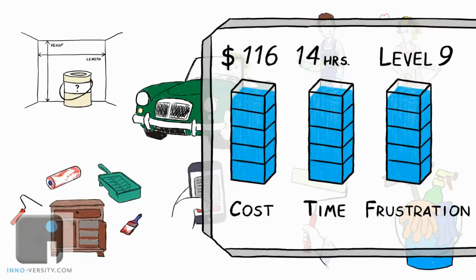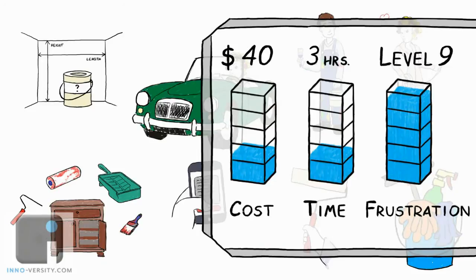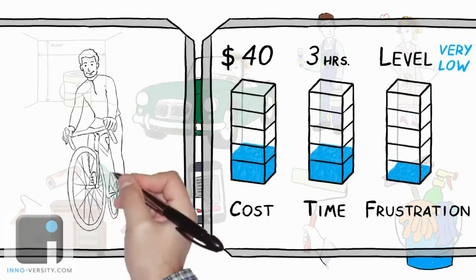If Steve had done it this way, his budget would have been about forty dollars. It would have been only a three or four hour job, saving several hours because his wife was helping him out. His frustration level would have been very low, and the truth is he could have gone biking almost all day.